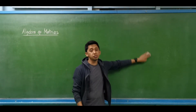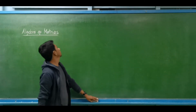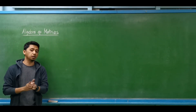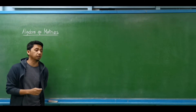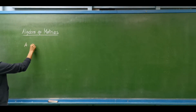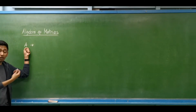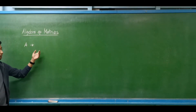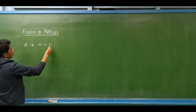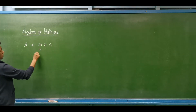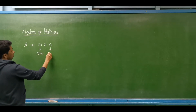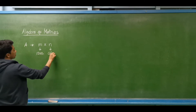Good day. Today we are here to discuss algebra of matrices. Basically, a matrix is a rectangular array of numbers. For example, we have matrix A — a rectangular array of numbers — with dimensions m by n, wherein m represents the number of rows, while n represents the number of columns.